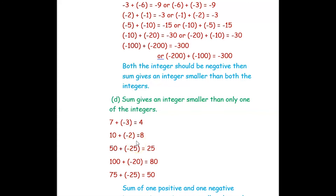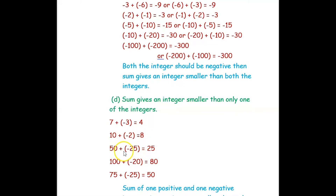Next, find two integers such that their sum gives an integer smaller than only one of the integers. The answer should be smaller than only one integer. So: 7 plus negative 3 equals 4; 10 plus negative 2 equals 8; 50 plus negative 25 equals 25; 100 plus negative 20 equals 80; and 75 plus negative 25 equals 50.